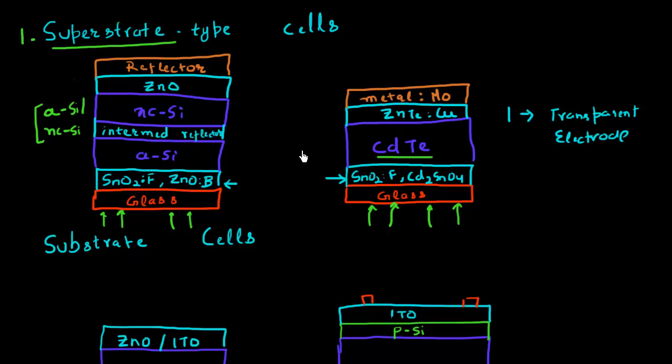In particular for the superstrate configuration, two unique properties that this TCO material needs to have: it needs to be thermally stable because most of these other layers, which are the absorber layer and the reflector, the metal reflector layer, are deposited after this TCO layer has been deposited.